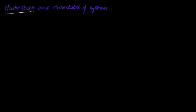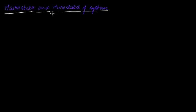So the first video, in order to really understand Maxwell's distribution, will be to understand what we mean by microstates and macrostates of a system. Because it's very important to understand the two properties by which you can describe a physical system. If you don't understand them, it's very difficult to actually understand how we go about solving the problem of probability distributions of different velocity distributions.